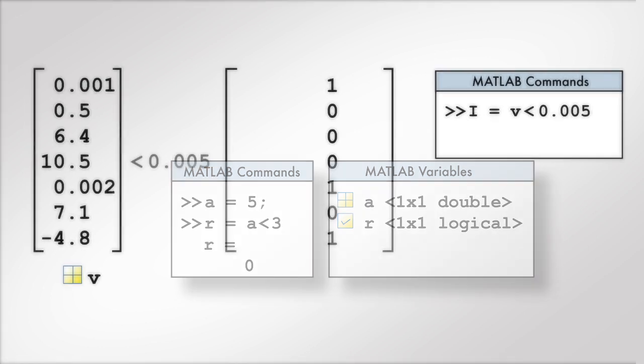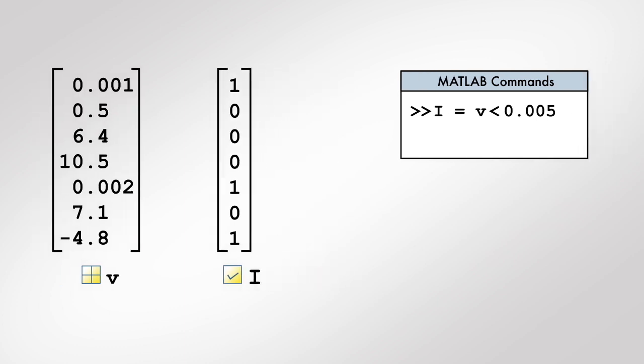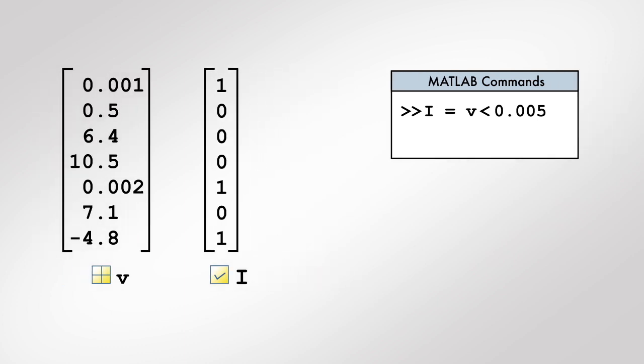Thus, the result of the command v less than 0.005 is a logical array, i, in which every element is either true or false.